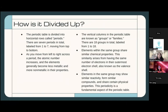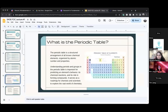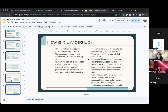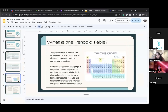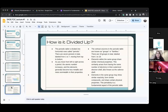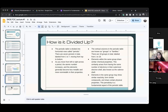The periodic table is divided up into rows and columns. The horizontal rows — the first row only has two elements, the second row has eight elements — and those rows are called periods. There are seven total periods in the periodic table. As you move left to right, the atomic number increases.